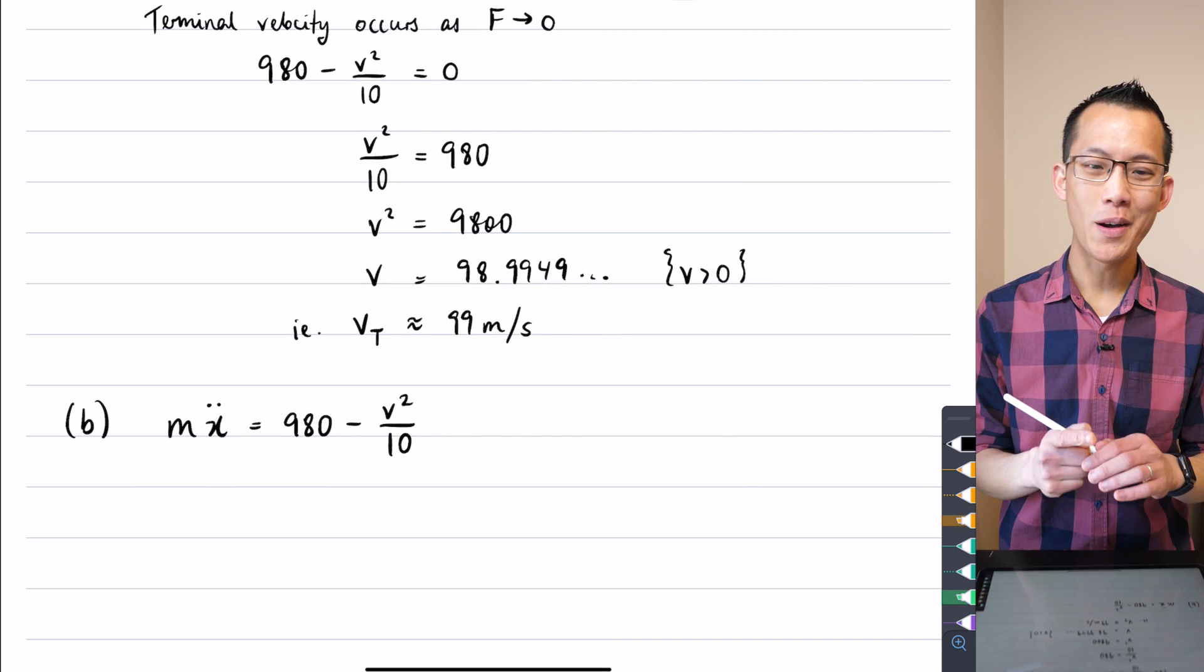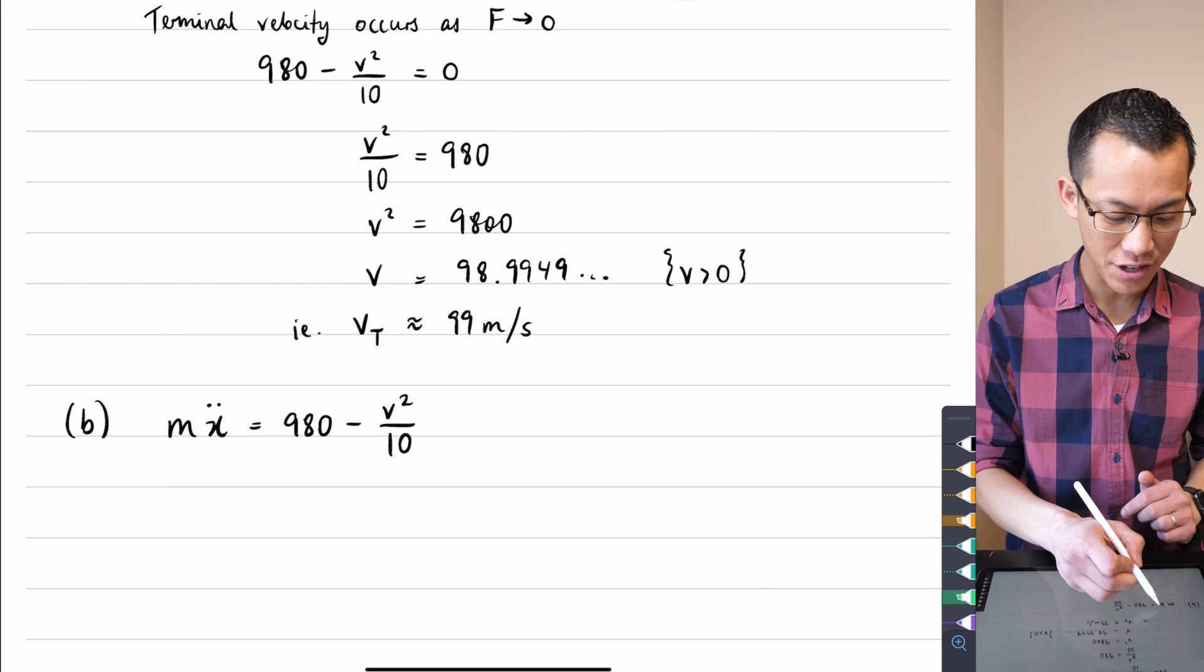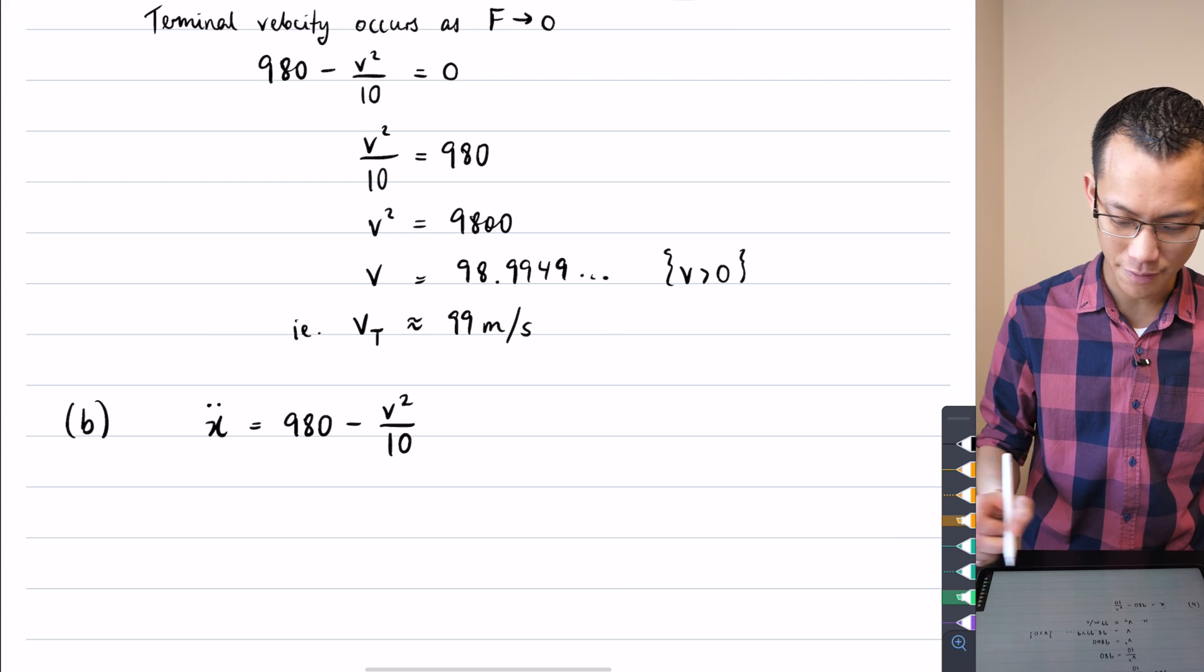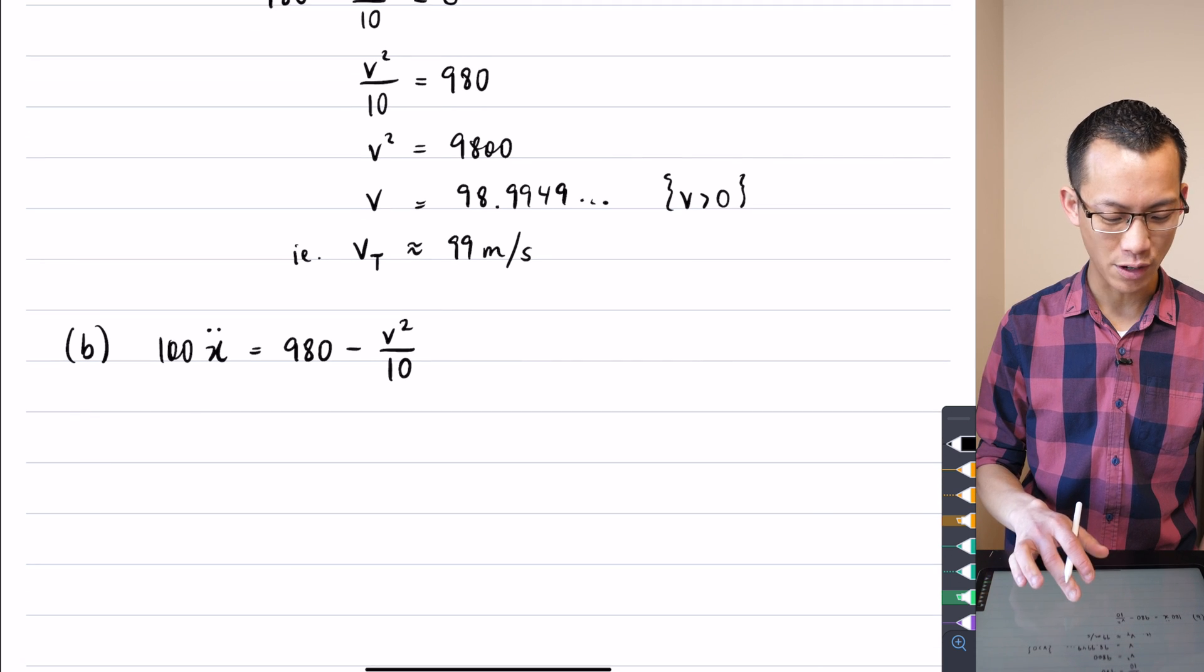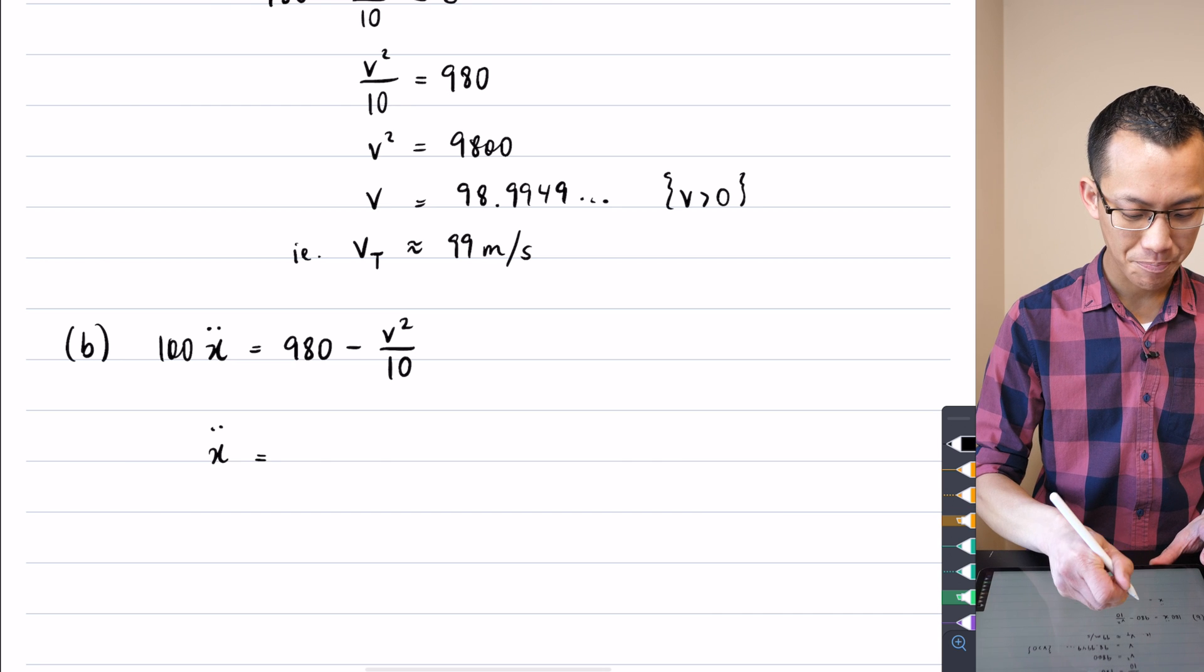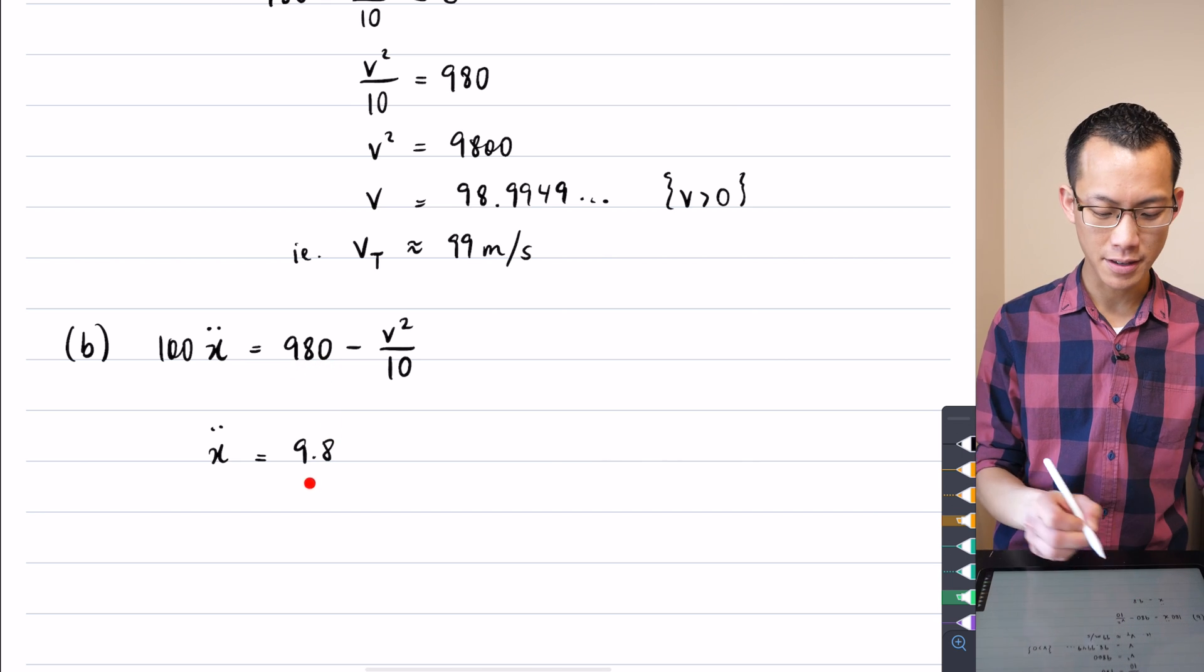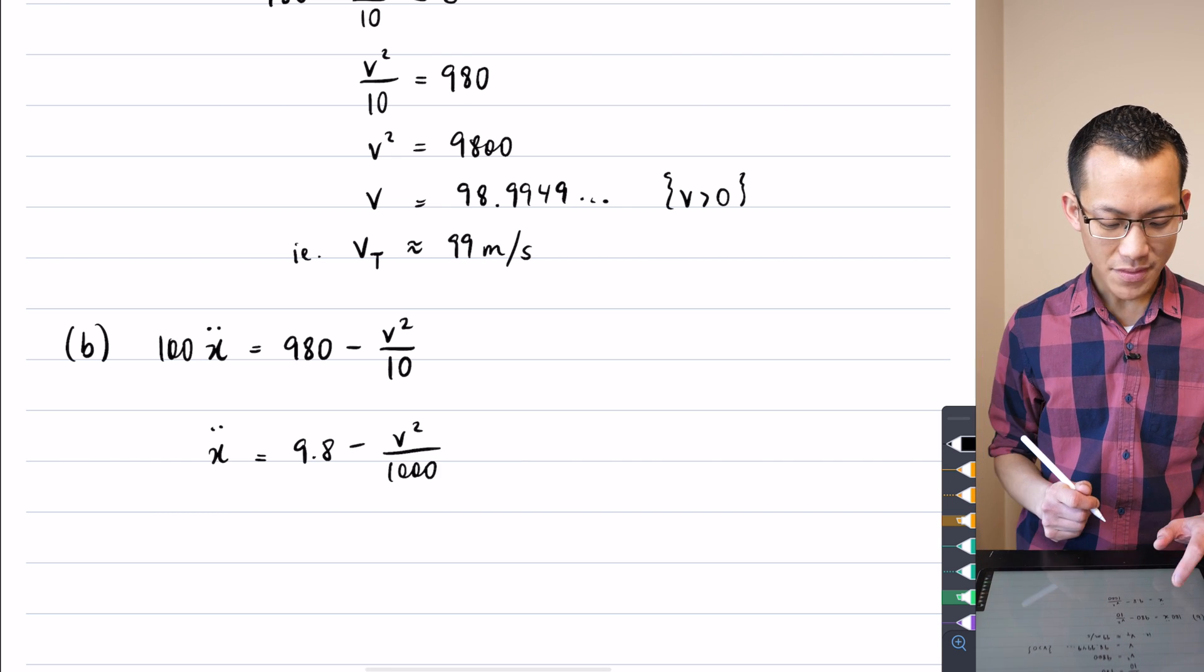Okay, now at this point I can say, hold up a minute, I'm trying to solve for x eventually, so I really just want this x double dot on its own. I don't know why I wrote that m there, because I already have the value for m, it's 100, so I'm going to isolate that acceleration part of the equation on its own. I'm going to divide through by that mass, so that gives me 9.8 minus v squared on 1000.